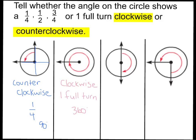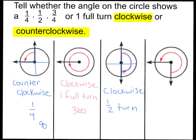Now let's look at number three. My direction starts here and goes clockwise, the way the hands of a clock move. So you should have said clockwise. It's going halfway around the circle — this would be called a half turn. Dividing into four parts, 90 degrees plus 90 degrees equals 180 degrees turn clockwise, which is a half turn.